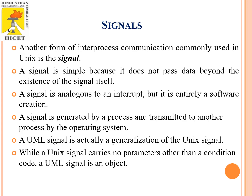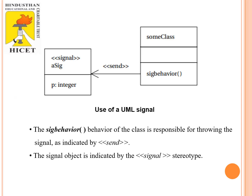Coming to the last style, that is signals. It is simple because it doesn't pass any data beyond the existence of the signal itself. A signal is generated by a process and transmitted to another process by the operating system. A UML signal is used as a generalization of the unique signal. There is a signal behavior: this behavior of the class is responsible for throwing the signal, indicated by send. The signal object is indicated by the signal stereotype, shown as 'signal' in the diagram.